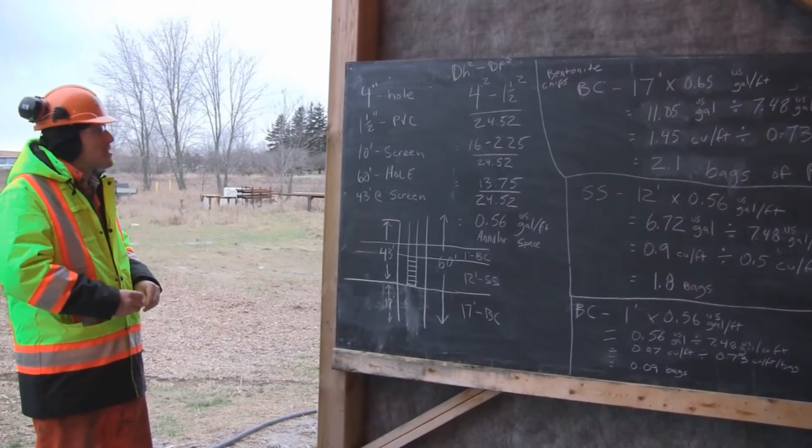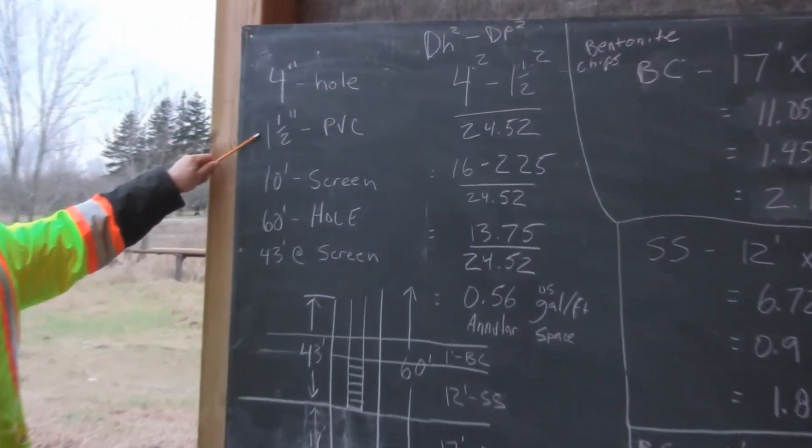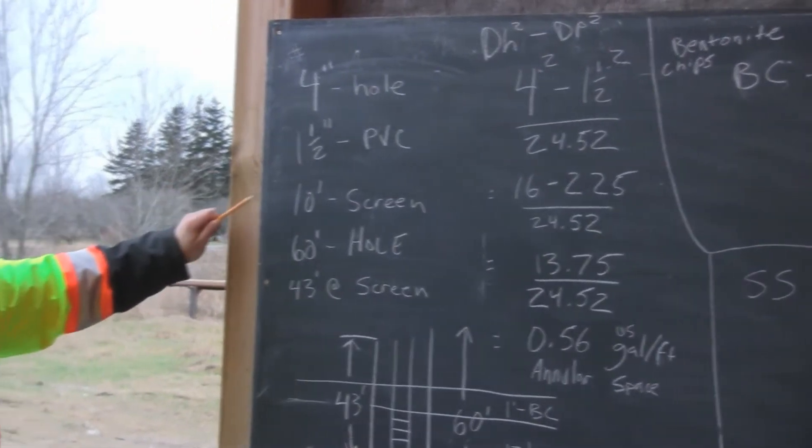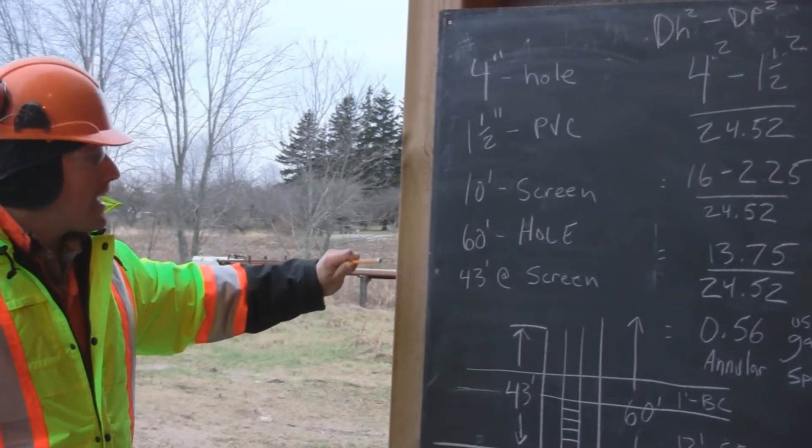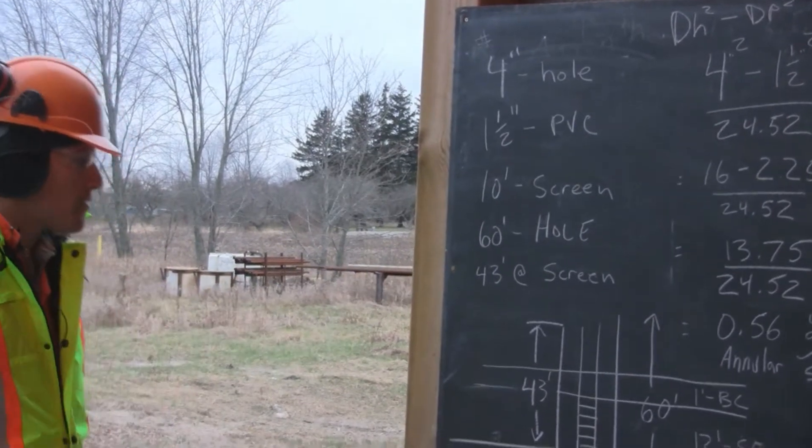Our hole specs are a 4-inch hole with a 1.5-inch PVC pipe, a 10-foot screen, and a 60-foot hole, and the screen is placed at 43 feet.